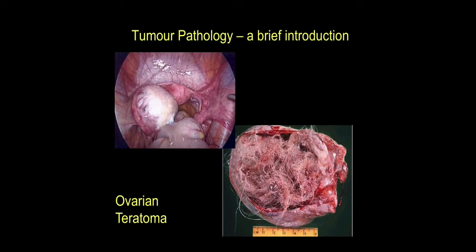One of the tricky questions around teratoma is whether it is benign or malignant. The vast majority of ovarian teratomas tend to be mature teratomas, where all the cell types we see are well differentiated and the tumor behaves in a benign fashion. However, sometimes cell elements in teratomas may become abnormal and form malignant counterparts. Neural elements in particular have a reputation for sometimes becoming malignant, and there are cases of thyroid tumors arising in the thyroid component of a teratoma.